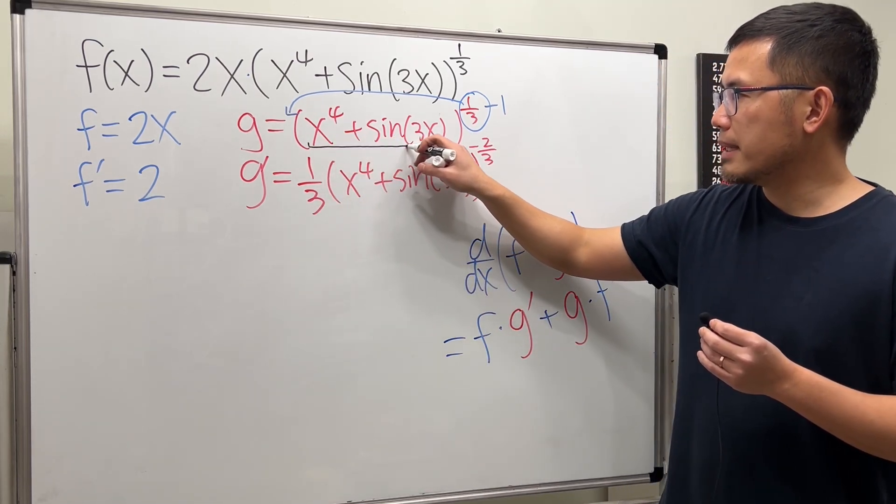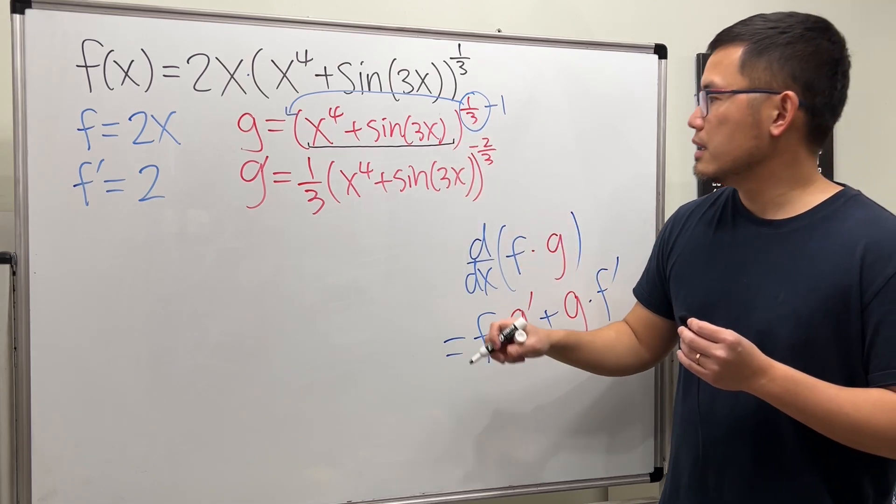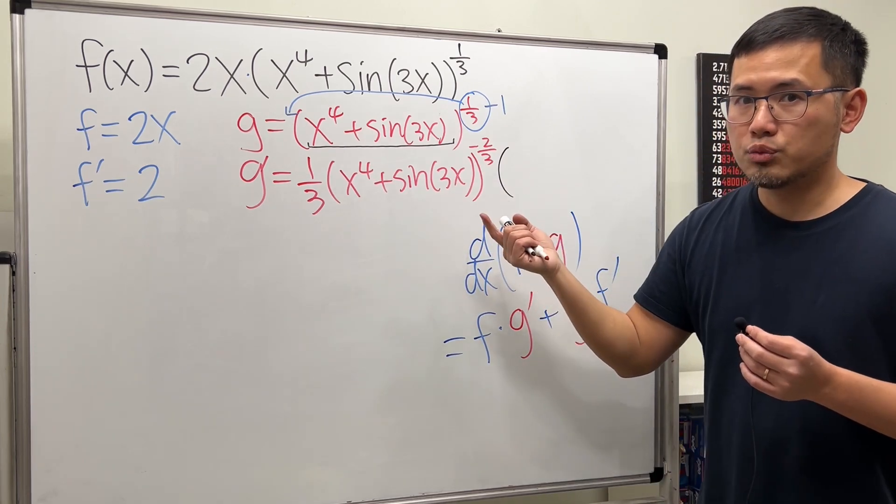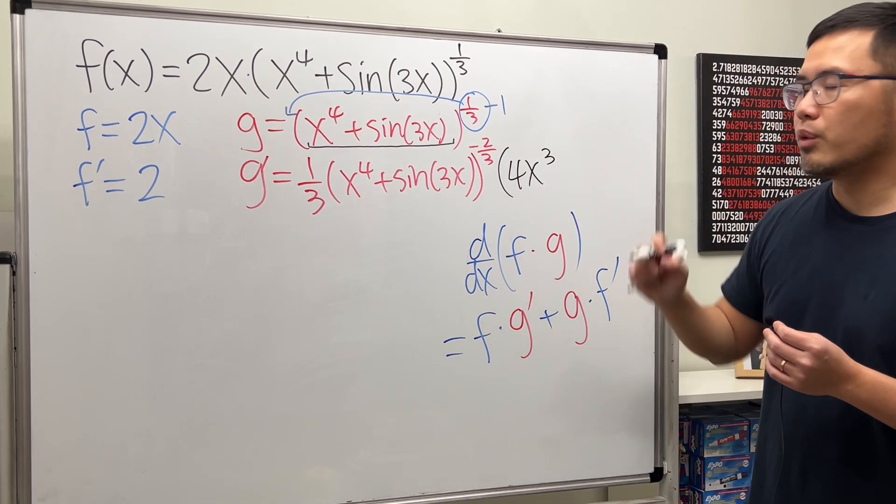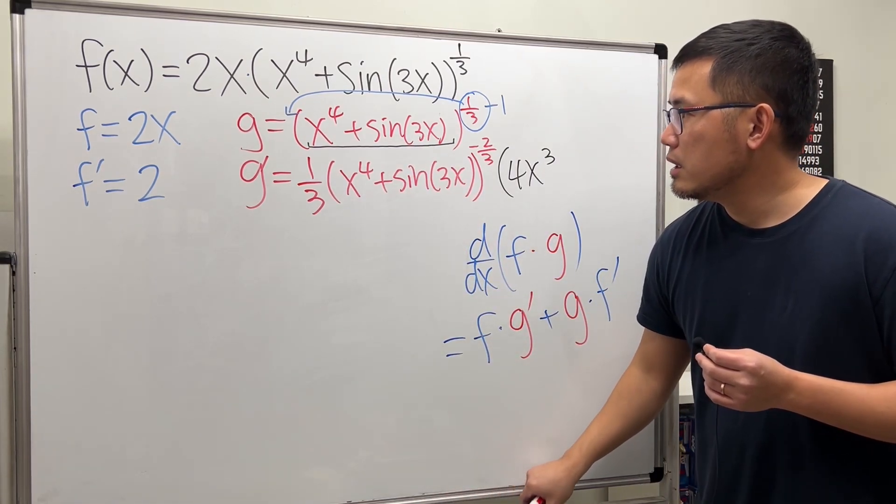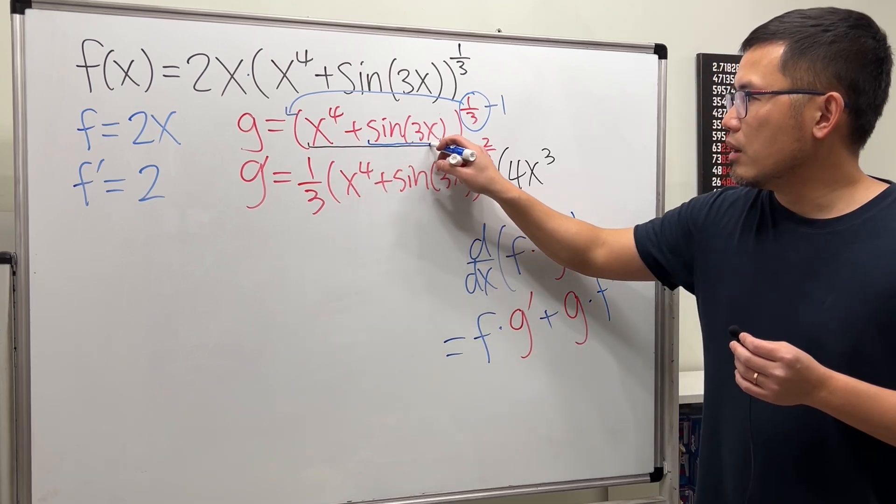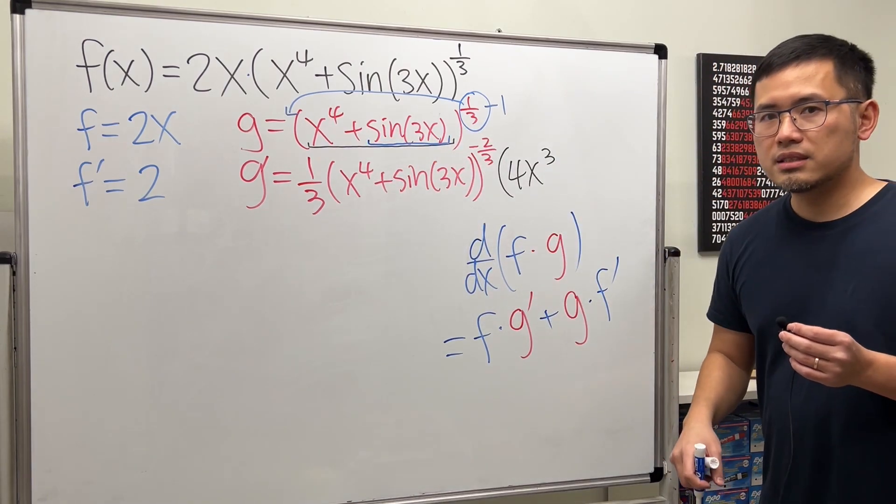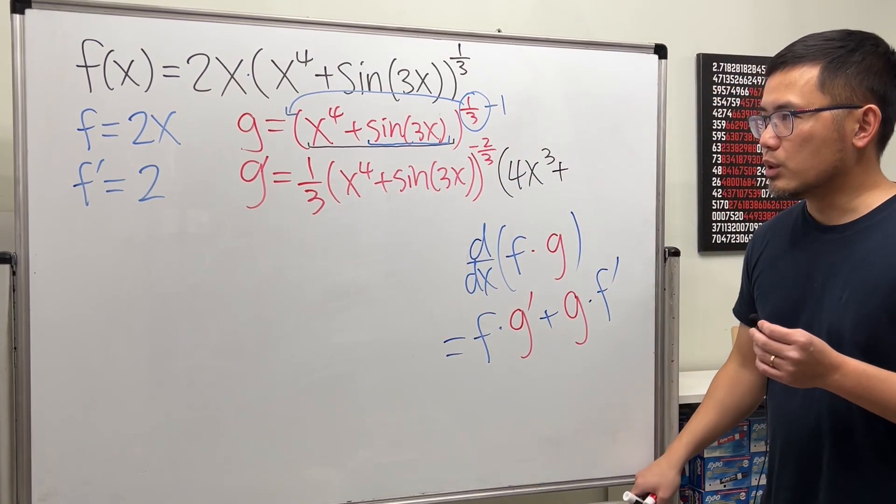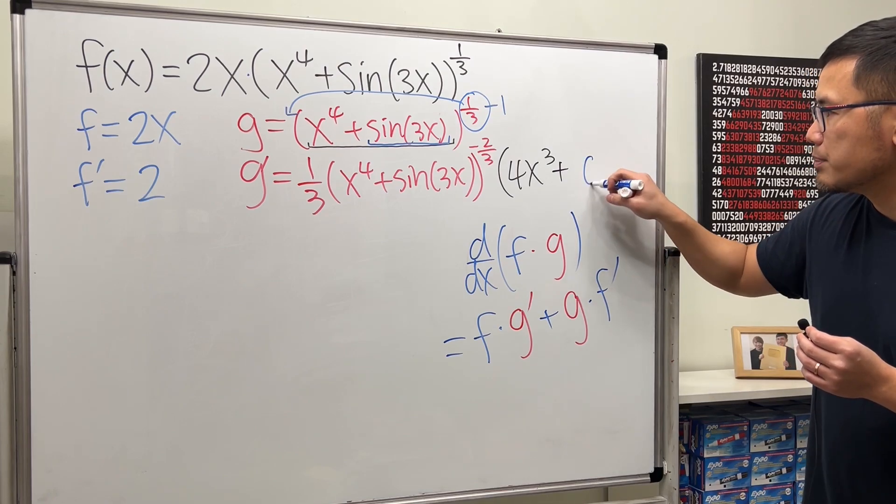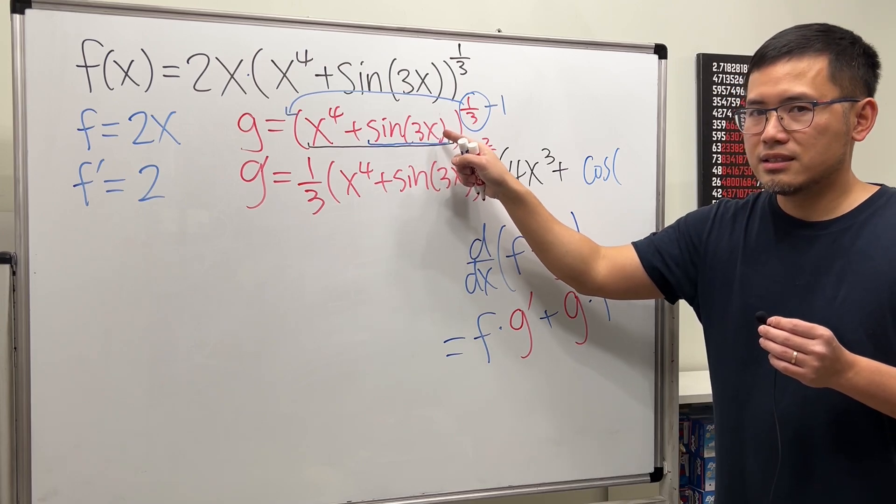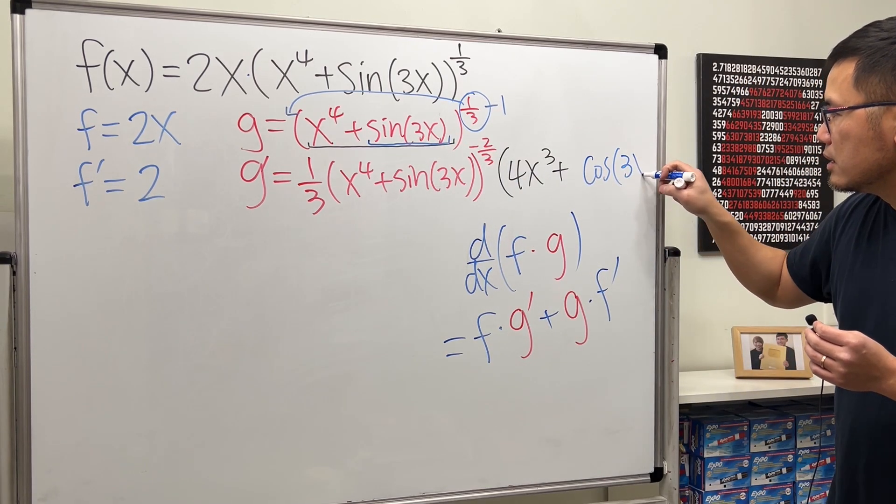For the chain rule, we are going to multiply by the derivative of the inside. So now let's put this down. What's the derivative of x to the fourth power? It's just 4x to the third power. Good. Now, what's the derivative of the sine of 3x? Well, first we will have to add. Because the derivative of sine is positive cosine. So let's put that down, cosine. And then the input here, we have 3x. Let's keep it like so.